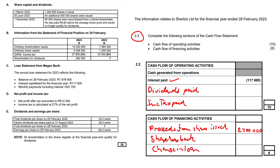For dividends paid: we take 1,200,000 shares and multiply by 24 cents, giving us 288,000. An additional 300,000 shares were issued, taking our total to 1,500,000 shares. We multiply 1,500,000 by 30 cents to get 450,000. So 288,000 plus 450,000 equals 738,000 for our interim and final dividends combined.